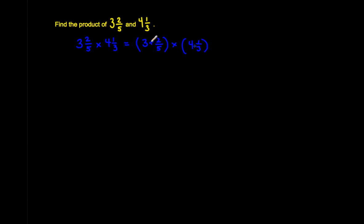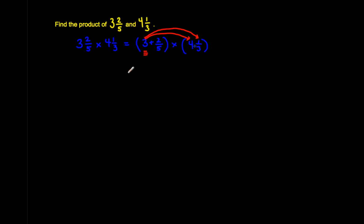This is where we use the distributive property. Basically, what the distributive property says is: if I'm multiplying three and two-fifths by four and one-third, then every single term in one group of numbers needs to be multiplied by every single term in the other group. So we're going to multiply three by four, and then put that together with three times one-third.